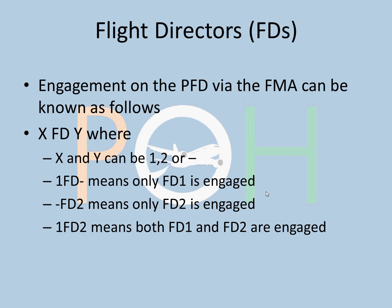Now from the FMA point of view, FD engagement is shown as XFD-Y, where X and Y can be 1, 2, or dash. '1FD-dash' means only FD1 is engaged. '1FD2' means both FD1 and FD2 are engaged. You should always fly with 1FD2 — never fly with dash-FD2 or 1FD-dash. FDs must be used together on both PFDs. Only in emergency cases where an FD has failed would you see dash-FD2, shown in the fifth column on the top-right corner of the FMA.